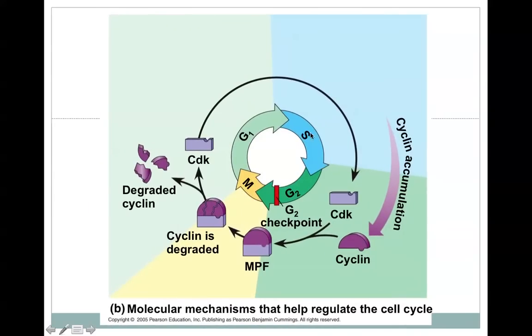These checkpoints work by the main mechanism, the action of these molecules here: CDKs, or cyclin-dependent kinases. And hopefully we, at this point, know what a kinase is. Remember, it's an enzyme which adds phosphate groups to proteins. It phosphorylates proteins.